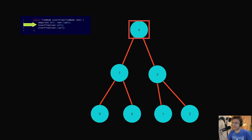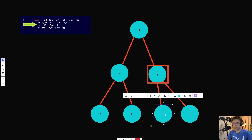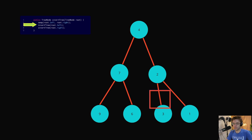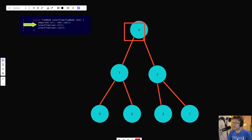Then we recurse down the right side of the tree to the next node, and we swap the two nodes below it — so this becomes 3 and 1. The same recursive process starts: it goes down the tree, there's nothing below those nodes to swap, so we go back up. Then we go to the rightmost node — same thing, no nodes below it. Finally, our traversal is done. Let's hop into IntelliJ and code this.